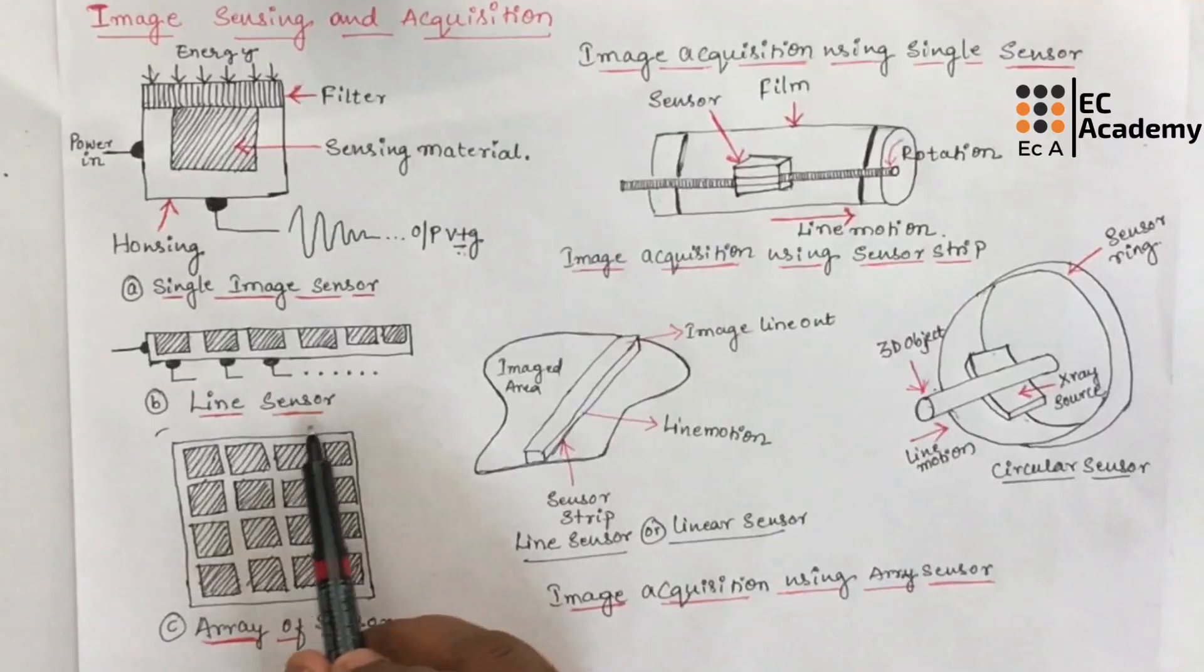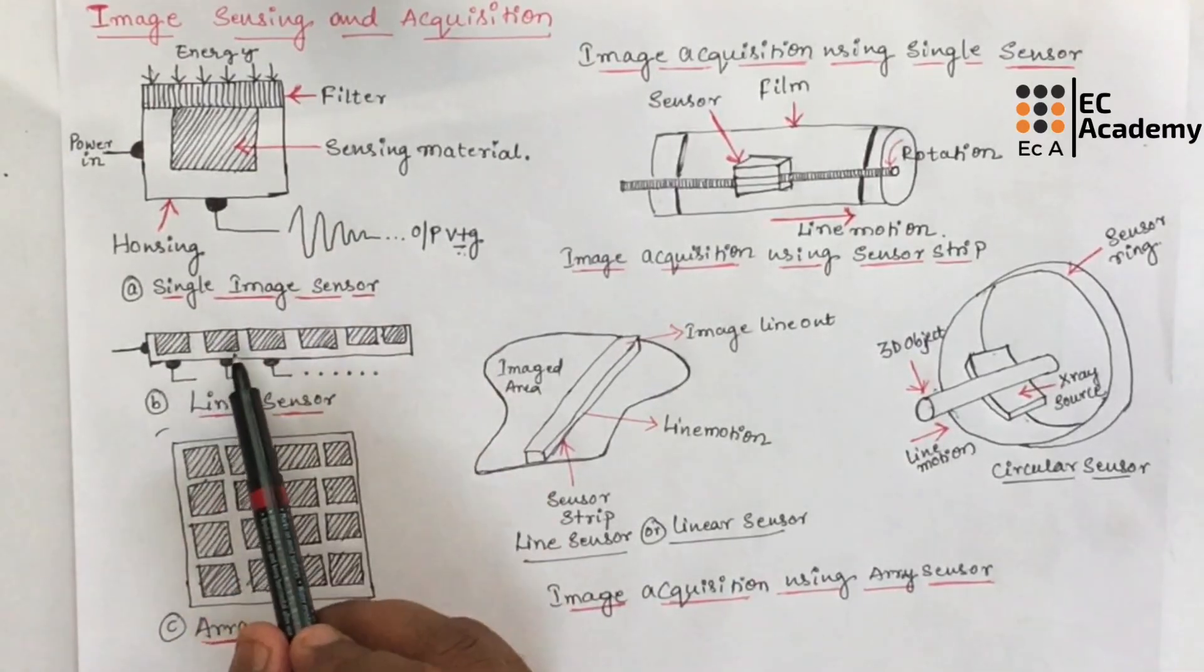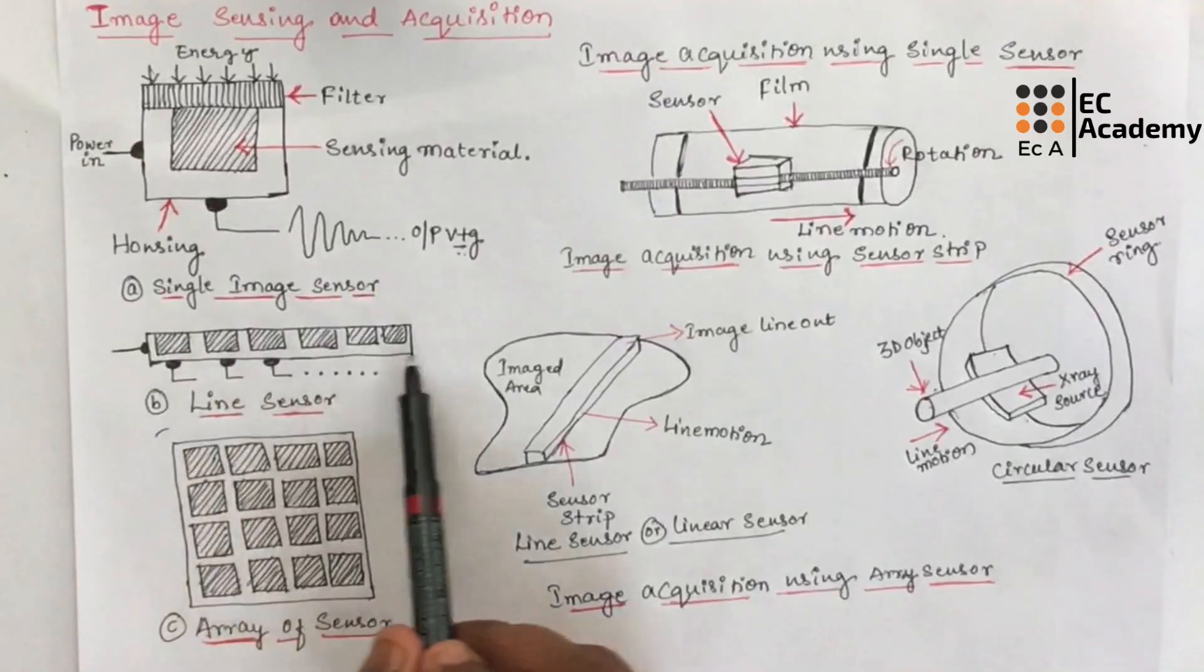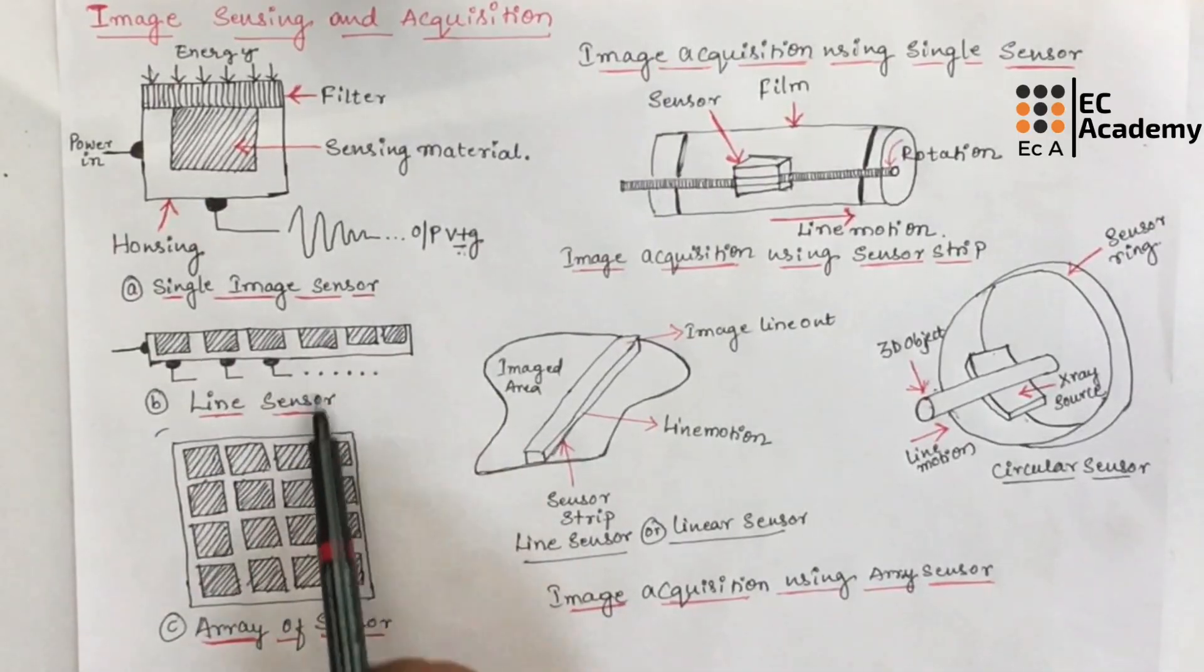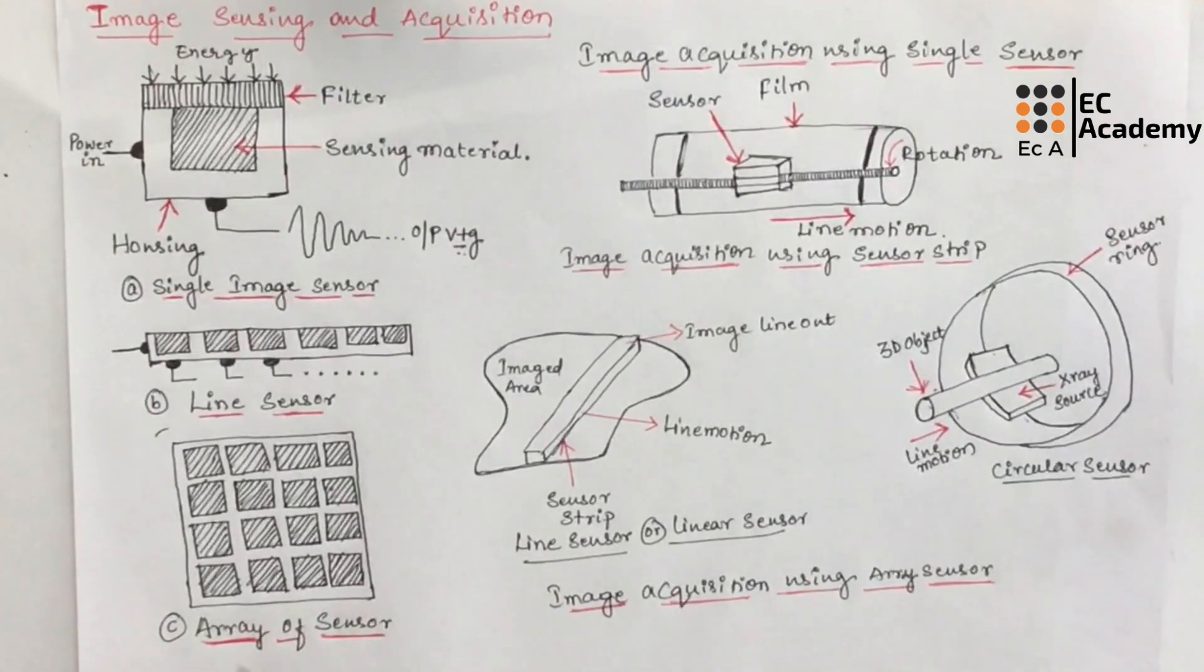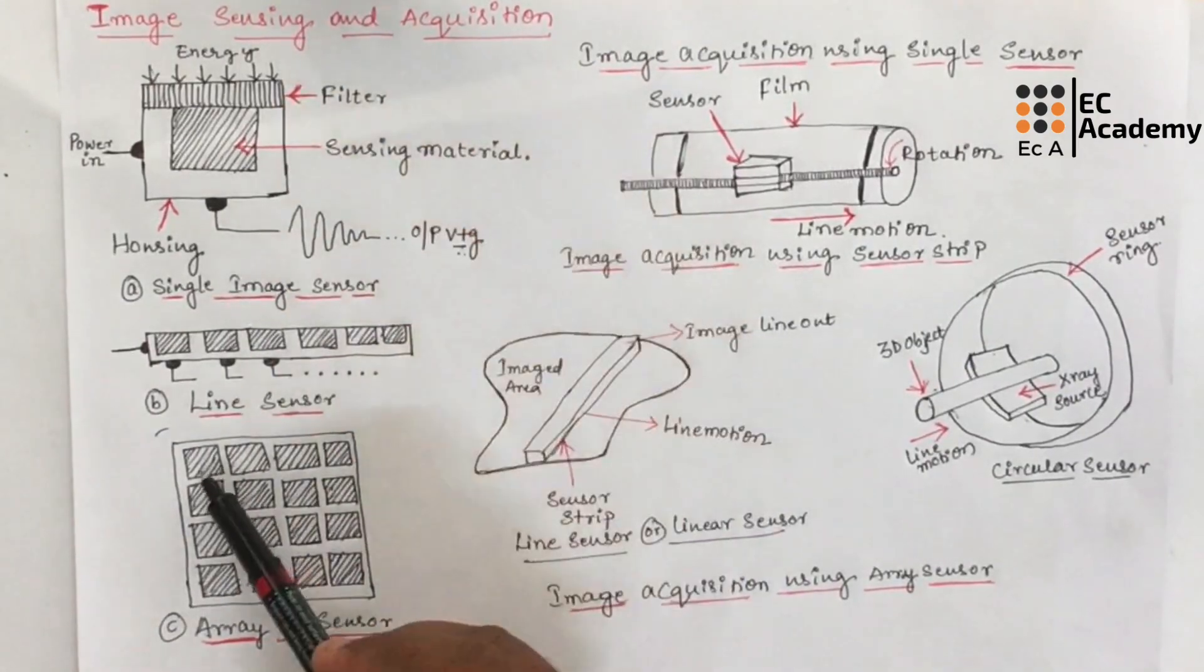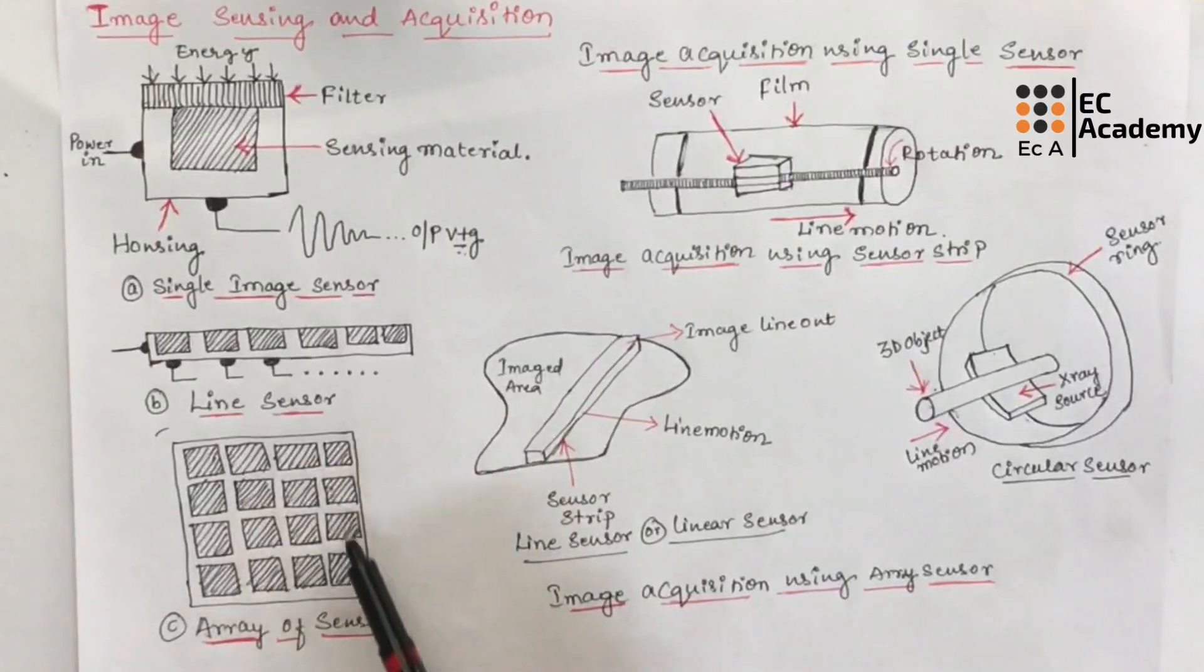Figure B shows the line sensor, where the sensor is arranged in the form of a line. This line sensor is also known as linear sensor. Figure C shows an array of sensor, where this sensor will be arranged in the form of an array.